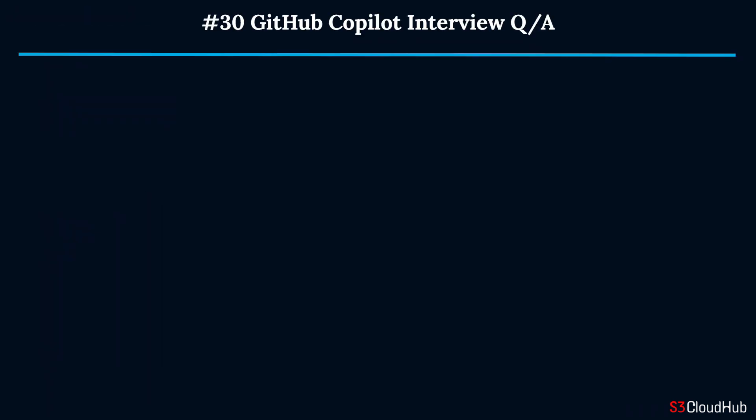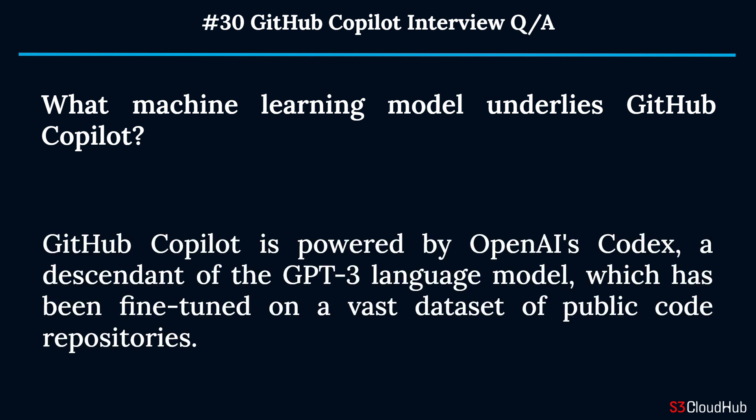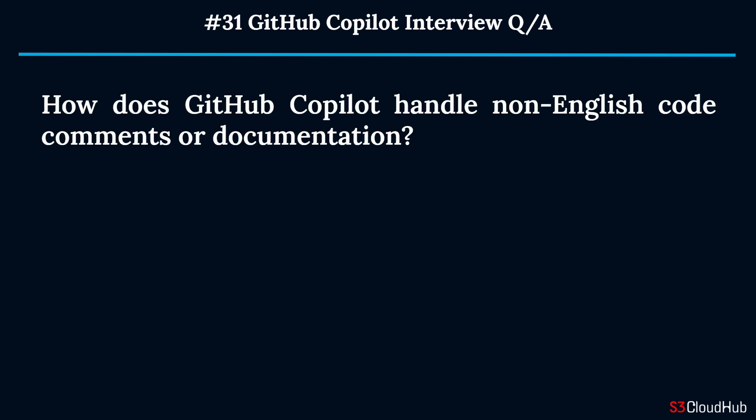Question thirty: What machine learning model underlies GitHub Copilot? GitHub Copilot is powered by OpenAI's Codex, a descendant of the GPT-3 language model, which has been fine-tuned on a vast dataset of public code repositories.